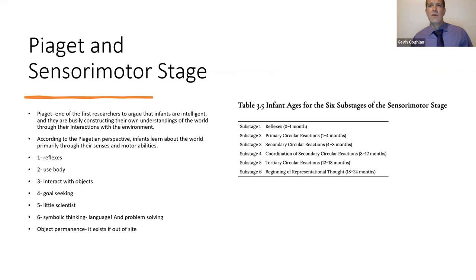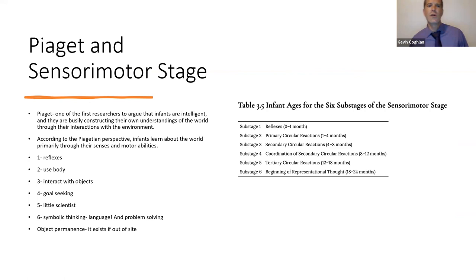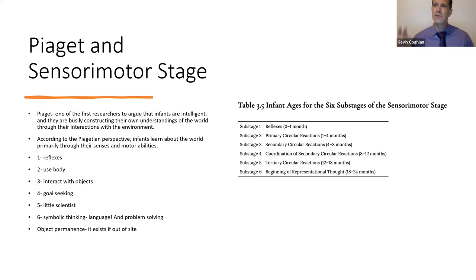With stage theories, we have Erikson's and Piaget's. Piaget talks about the sensorimotor stage and was one of the first researchers to argue that infants are intelligent — constantly taking in information and developing schematic knowledge. According to Piaget, infants learn about the world primarily through their senses and motor abilities. He breaks it into stages: stage one is reflexes, stage two kids start to use their body, stage three we learn to interact with objects, stage four we engage in goal-seeking behavior, stage five we become little scientists exploring the world, and stage six we start to use symbolic language, symbolic thinking, and problem-solving.